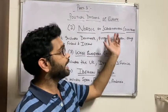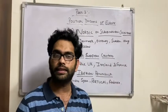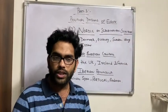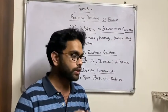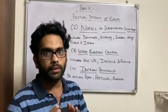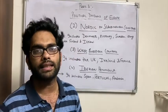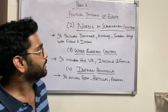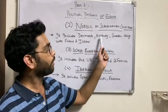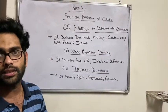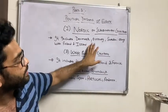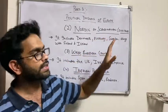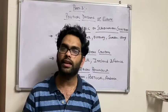The Scandinavian countries are those countries which are located on the peninsula of Scandinavia. There is one peninsula called the Scandinavian Peninsula. The three important countries are Denmark, Norway, and Sweden. These three are the important countries which belong to the Nordic or Scandinavian group.